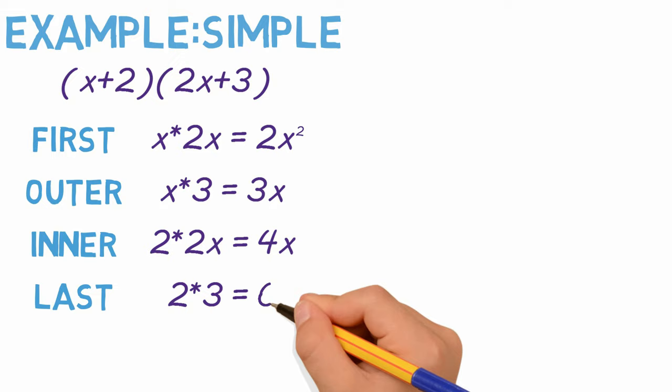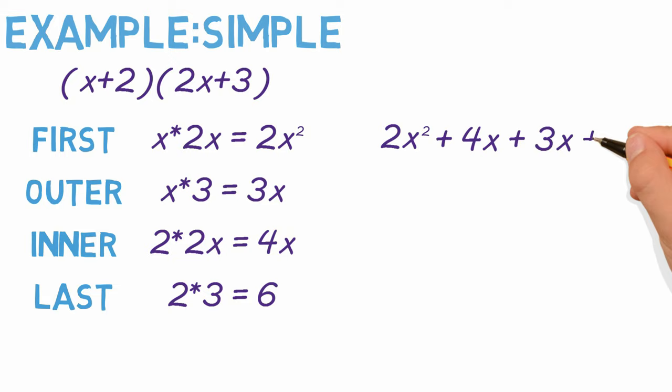Now we have the equation 2x squared plus 4x plus 3x plus 6. All that is left to do is combine like terms. In this case the sum of 4x and 3x which gives us 7x. So we end up with 2x squared plus 7x plus 6. Simple right?